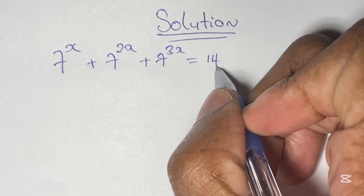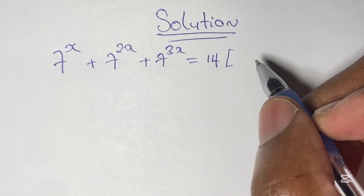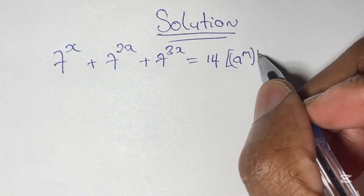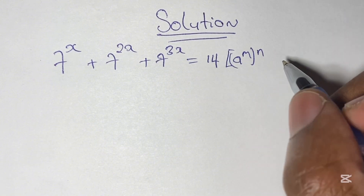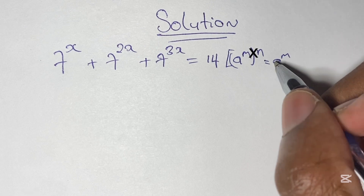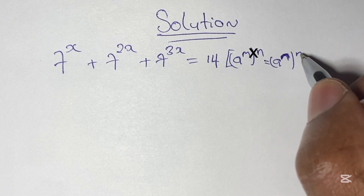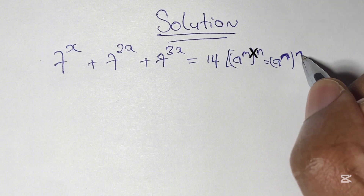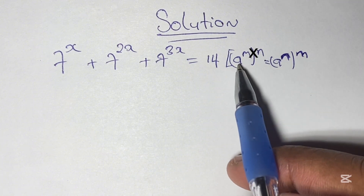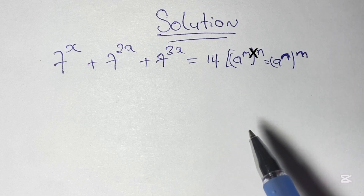Our equation states that 7 to the power of x, plus 7 to the power of 2 times x, plus 7 to the power of 3 times x, is equal to 14. Now using the laws of indices, where a to the power of m times n is the same as a to the power of n times m, we'll use this principle to simplify our equation in order to solve x.